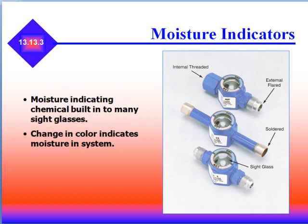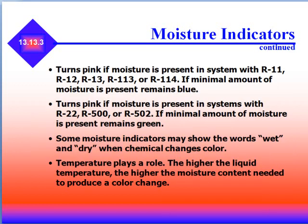Moisture indicators are built into many sight glasses. A change in color indicates moisture in the system. They turn pink if moisture is present in systems with R11, R12, R13, R113, or R114; if minimal moisture is present, the indicator remains blue. It turns pink if moisture is present in R22, R500, or R502; with minimal moisture the indicator remains green. Some moisture indicators may just show the words 'wet' and 'dry' when the chemical changes color. Temperature also plays a role — the higher the temperature, the higher the moisture content needed to produce a color change.